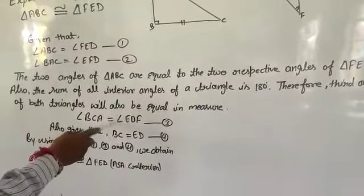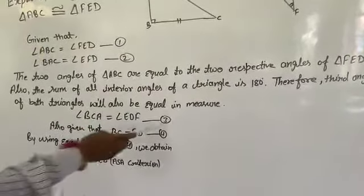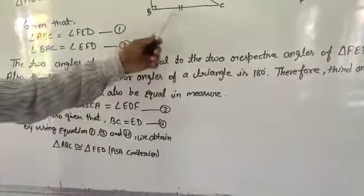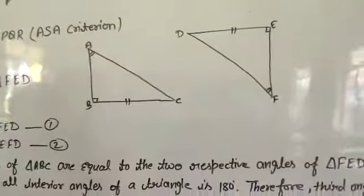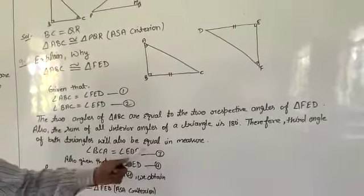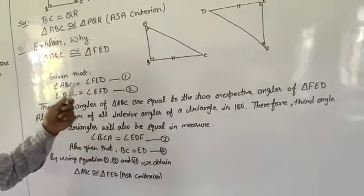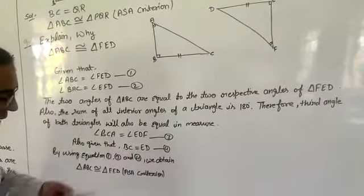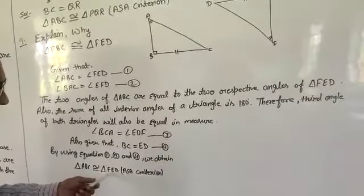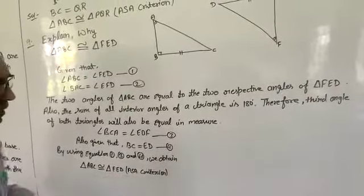So angle BCA is equal to angle EDF. This is the third equation. Also given that BC is equal to ED, this side is equal to this side. Now, by using equations 1, 3, and 4, which means one angle, one side, and another angle, triangle ABC is congruent to triangle FED by ASA, which is angle-side-angle.